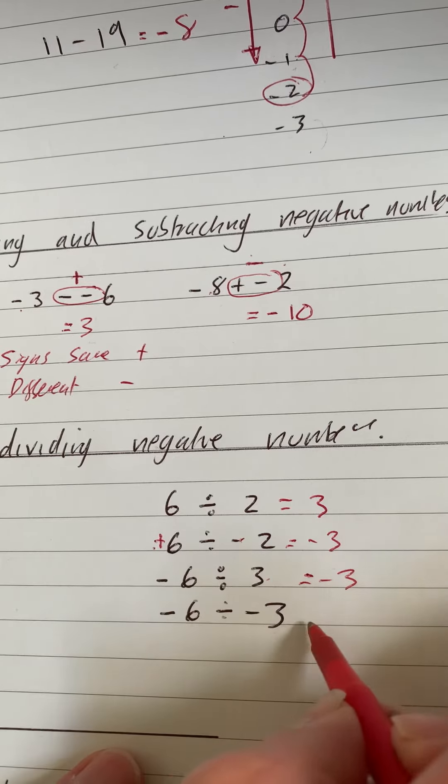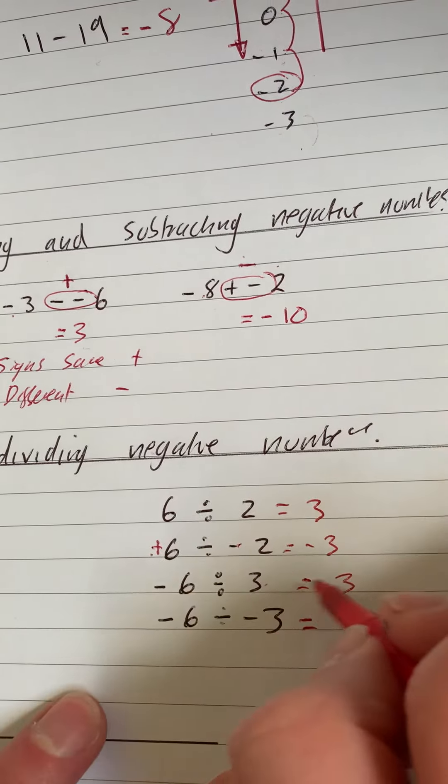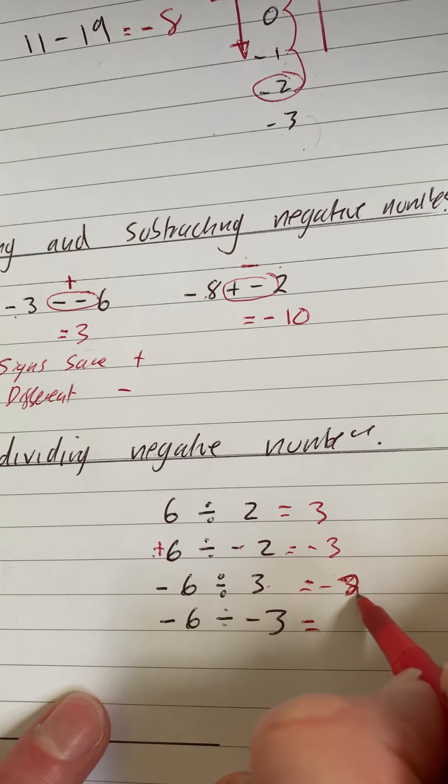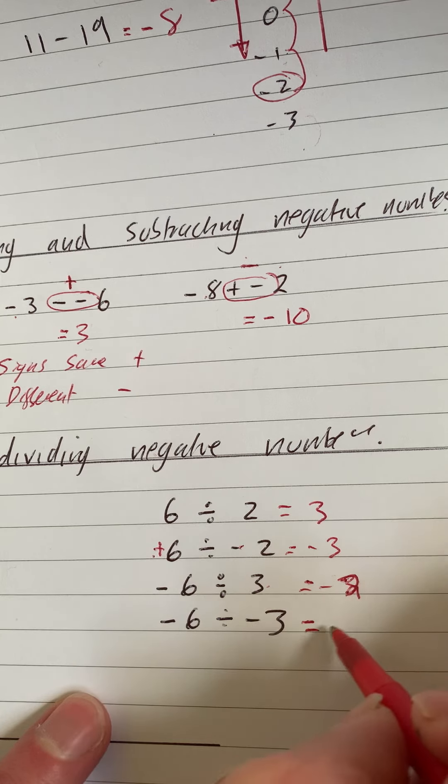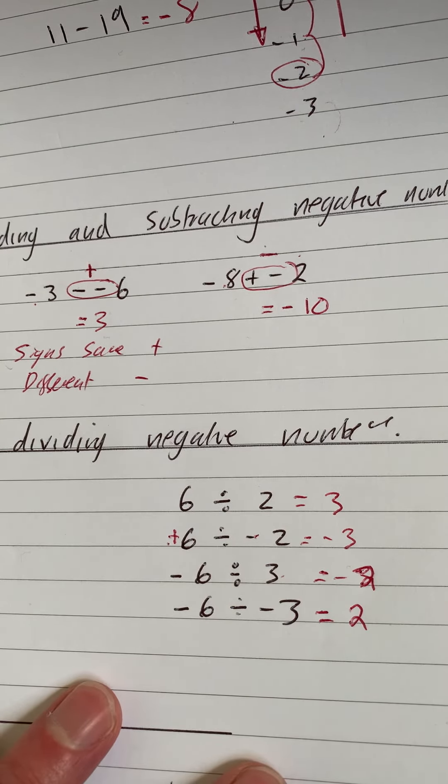Now these two are the same, so we're going to get—so I've changed it here for some reason. So -6 divided by 3, -2, and then -6 divided by -3 gives you positive 2. I don't know why I suddenly started changing the questions halfway through.